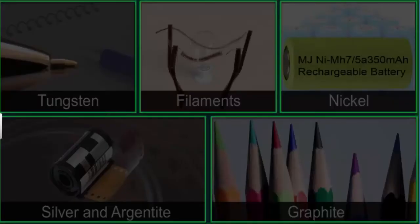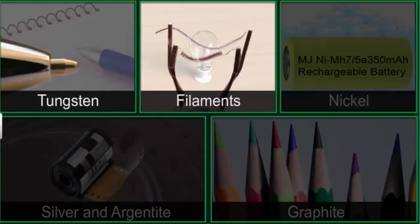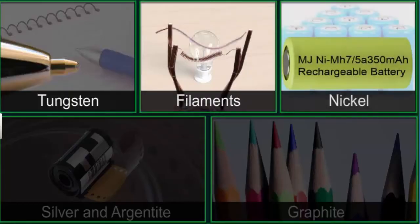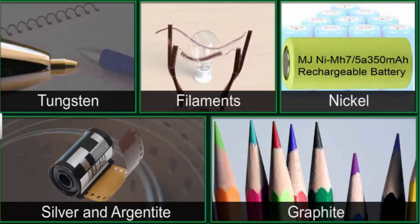Other examples of minerals utilized in articles of daily use are tungsten in ballpoint tips and filaments in light bulbs, nickel in rechargeable batteries, silver and argonite in photographic films, and graphite in pencils.